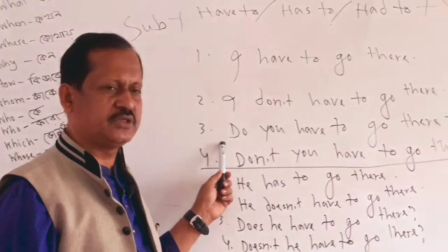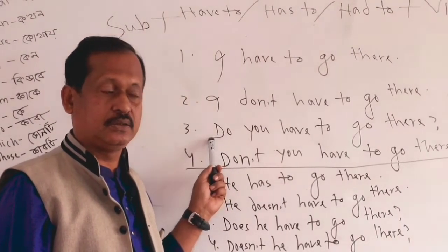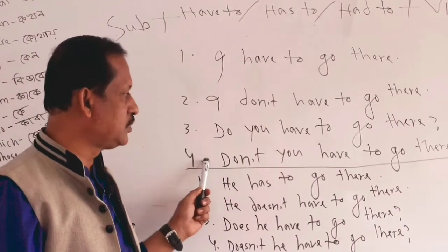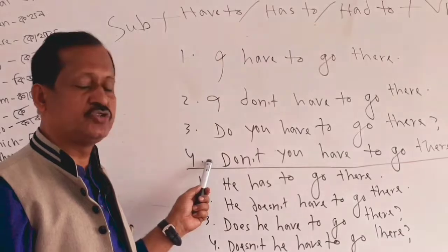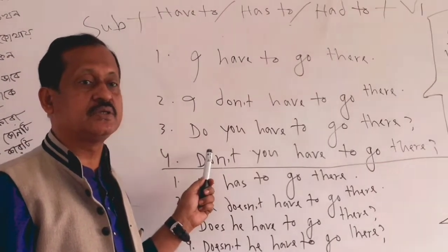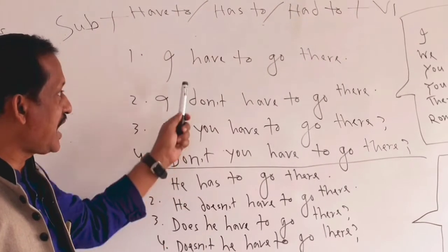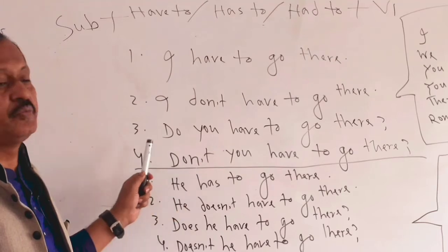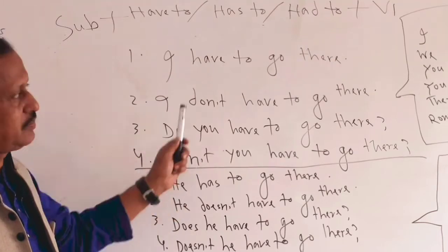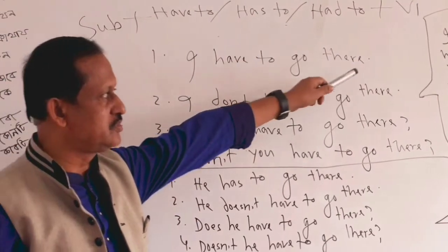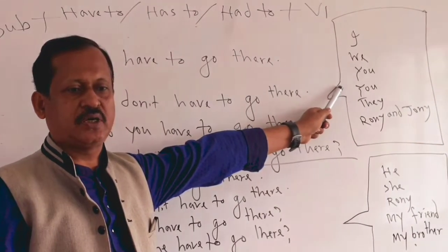Interrogative: 'Do you have to go there?' — meaning, do you need to go there? Negative interrogative: 'Don't you have to go there?' — meaning, don't you need to go there? I have written all forms in the practice box on the side for easy practice.